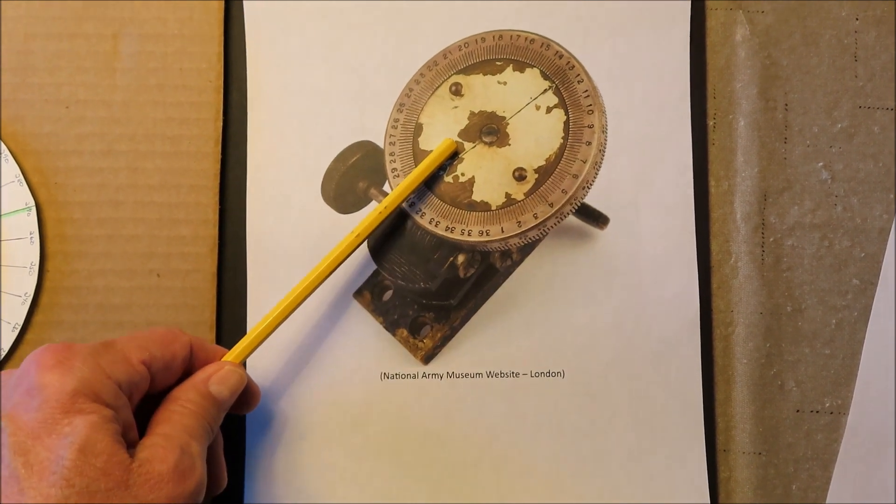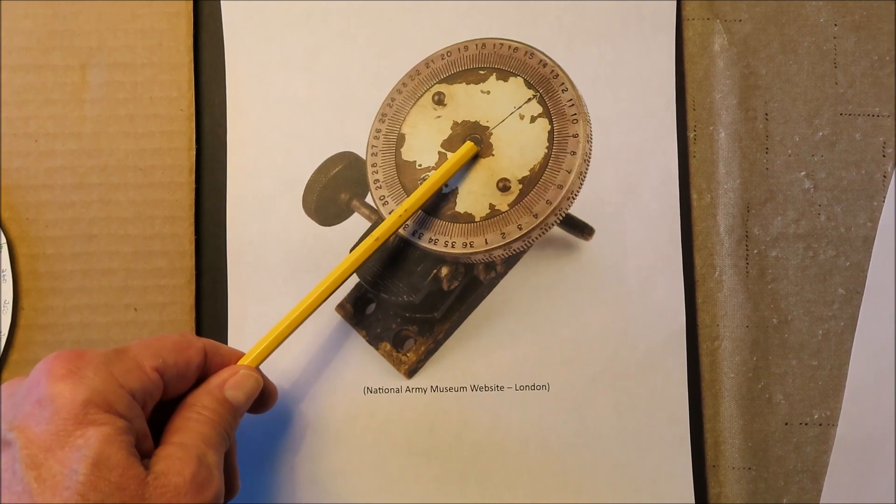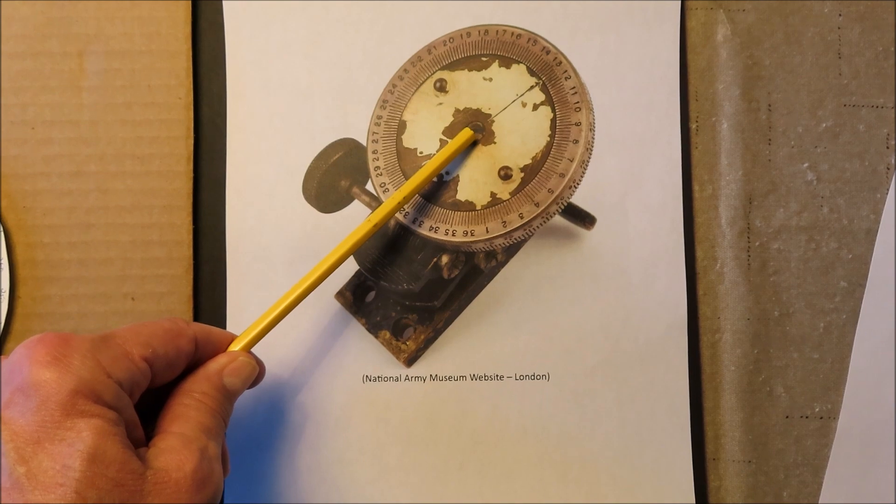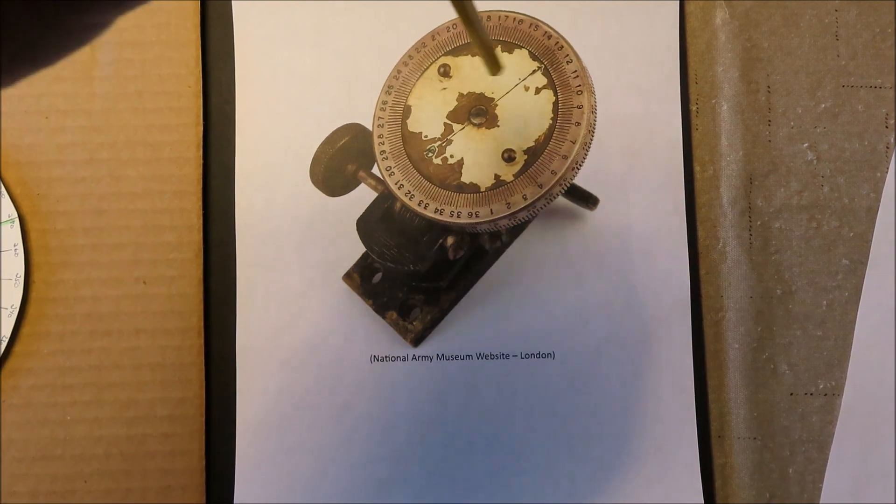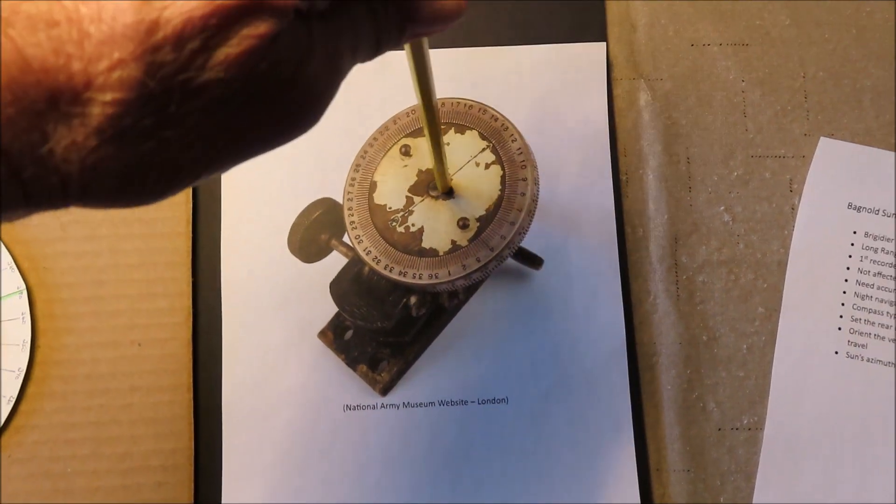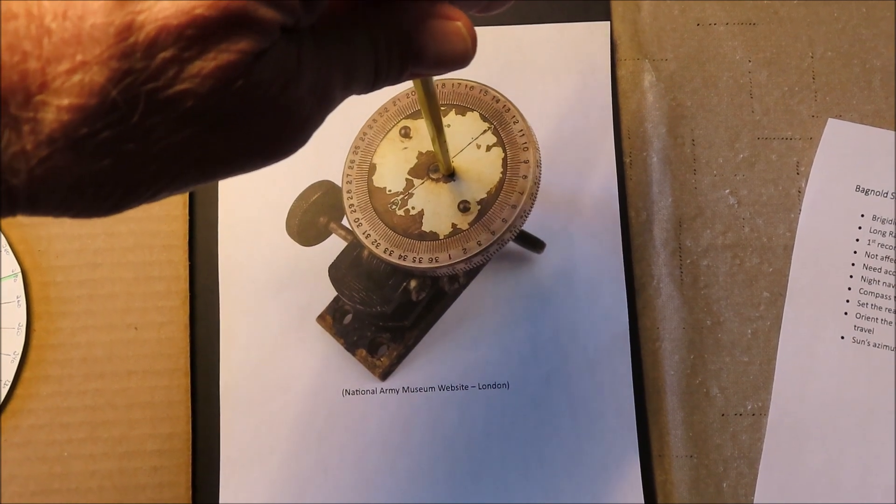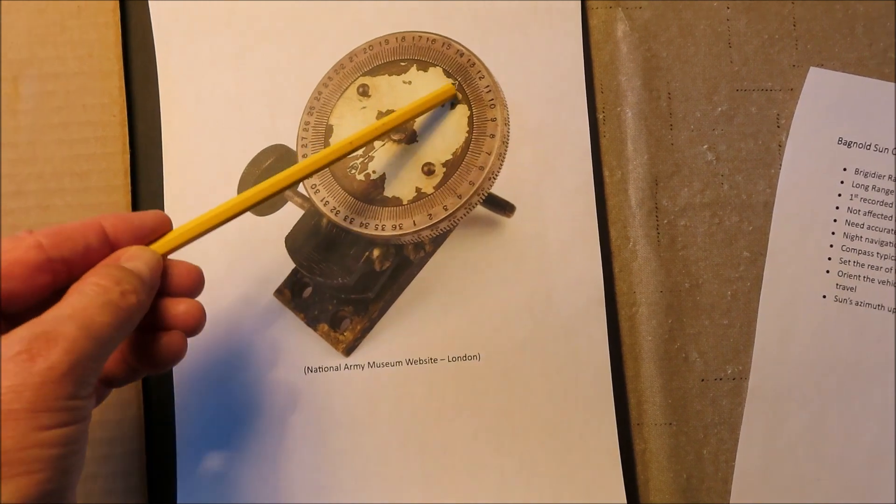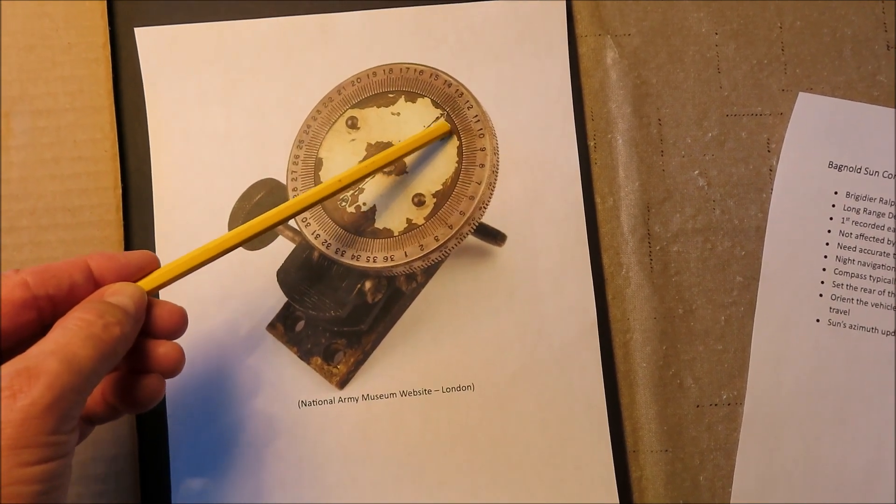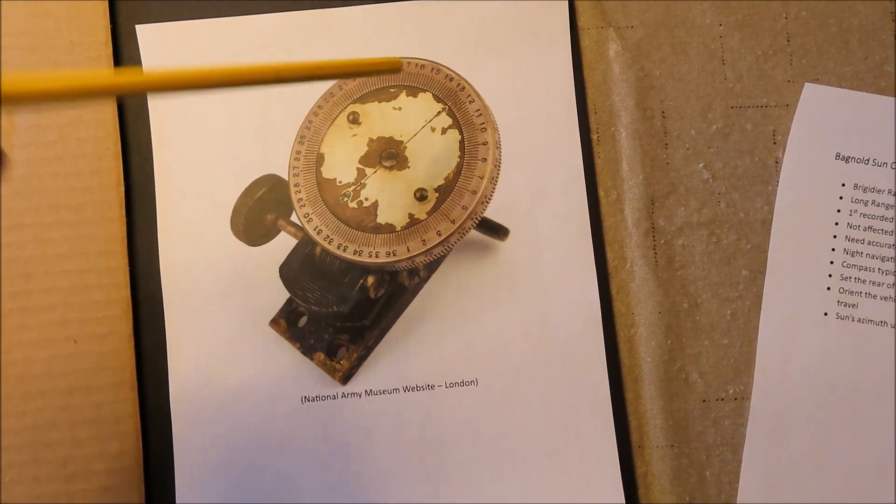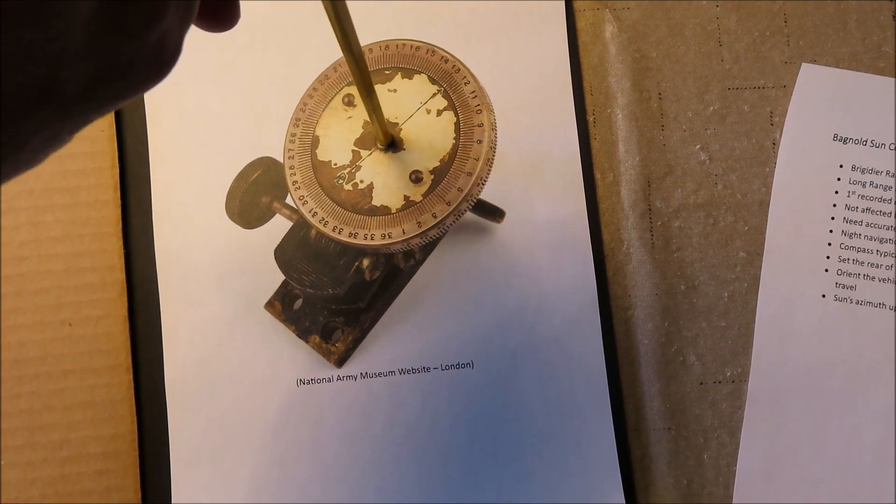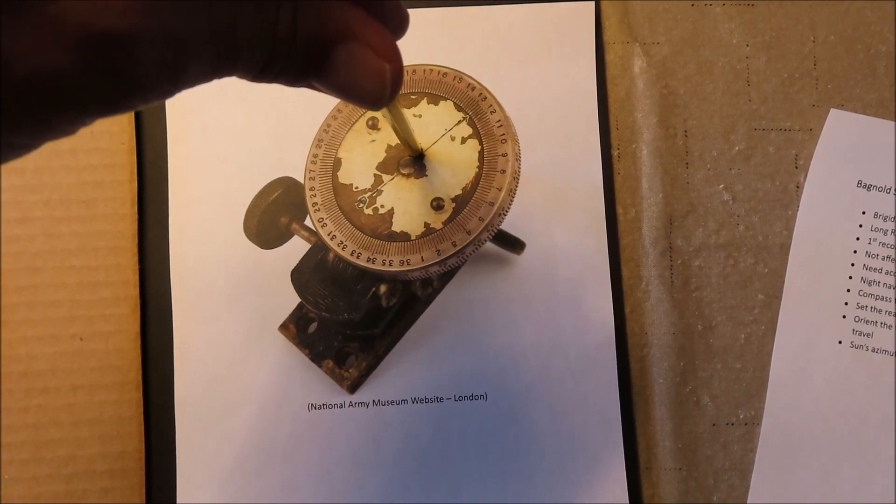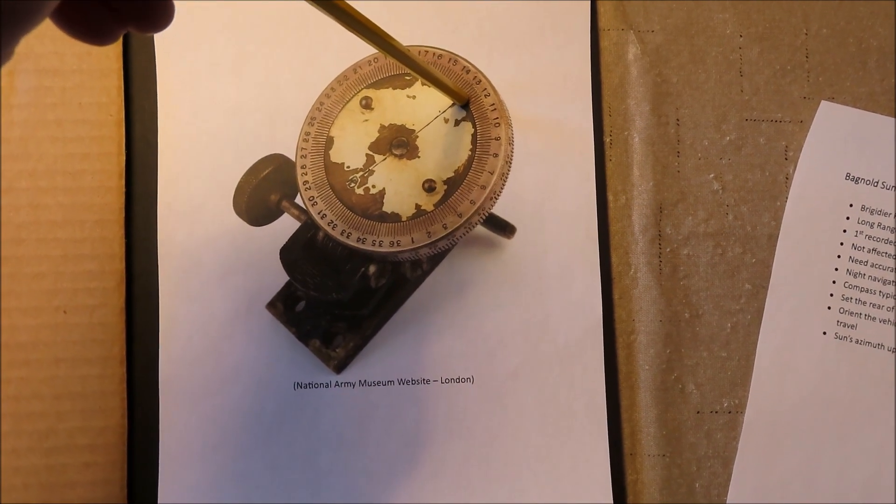And then the top of the dial here, there would have been a needle, a knitting needle that was put into this hole here, which stuck straight up like this. Okay, I'm using a pencil. And then you turn this dial until this pointer is pointing in the direction of travel. And then you turn your vehicle so that the shadow falls on your desired direction of travel.